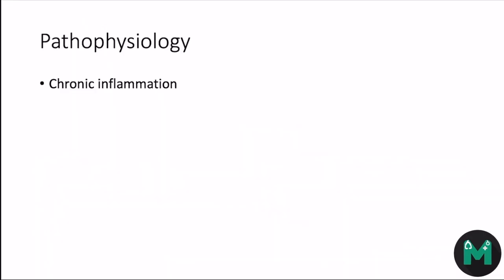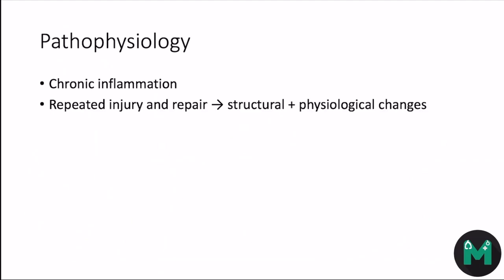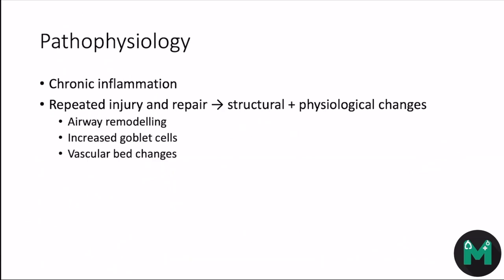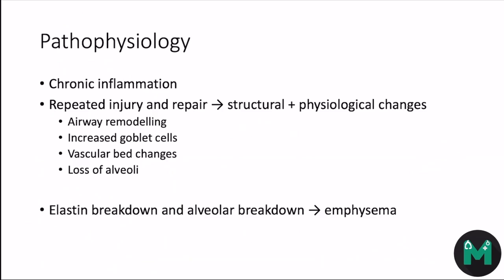To summarise: chronic inflammation is central to the pathophysiology of COPD. Repeat injury and repair results in structural changes in the lung, which increase with disease severity and persist even after smoking cessation. These include airway remodeling, increased goblet cells, vascular bed changes, and loss of alveoli. Breakdown of elastin causes decreased elastic recoil, fibrotic changes in the parenchyma, and luminal obstruction by secretions, all resulting in increased airway resistance.